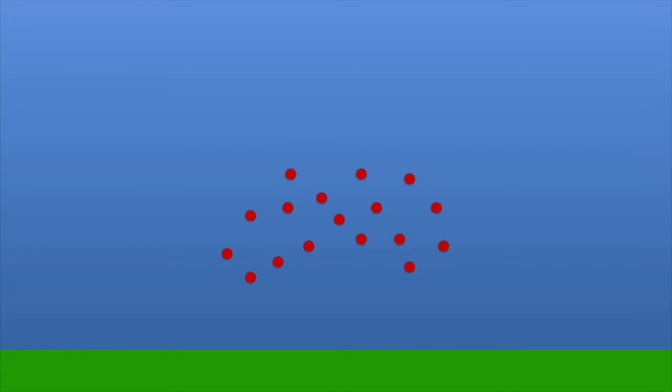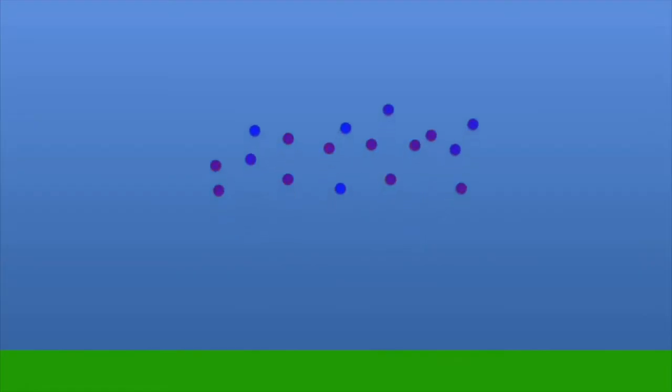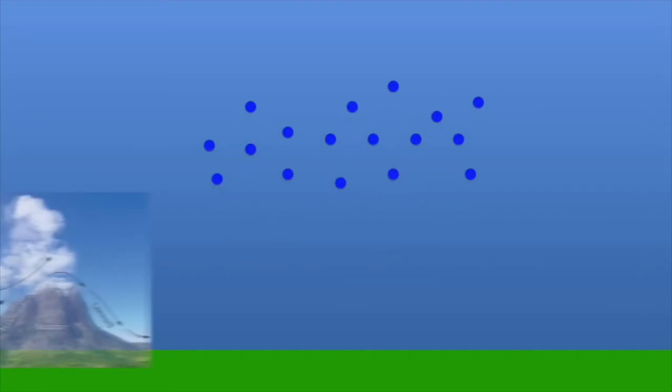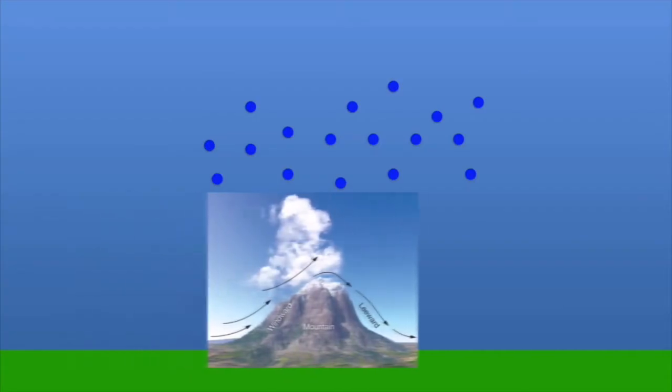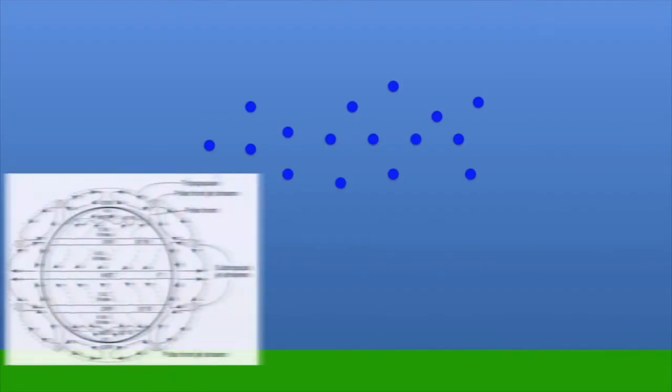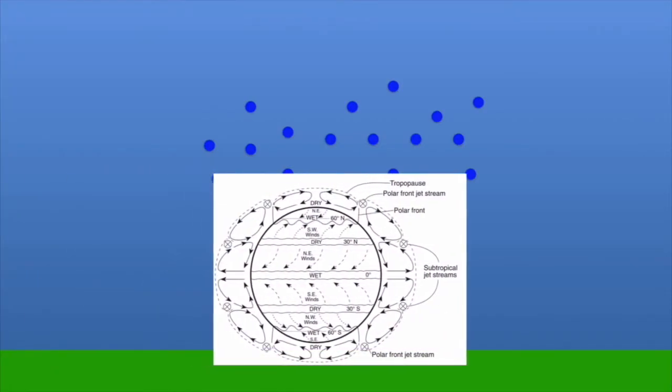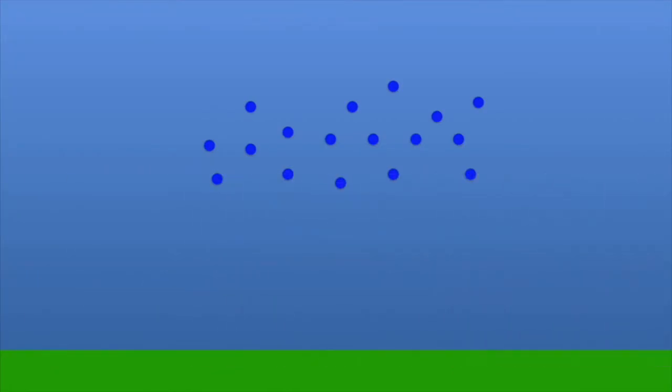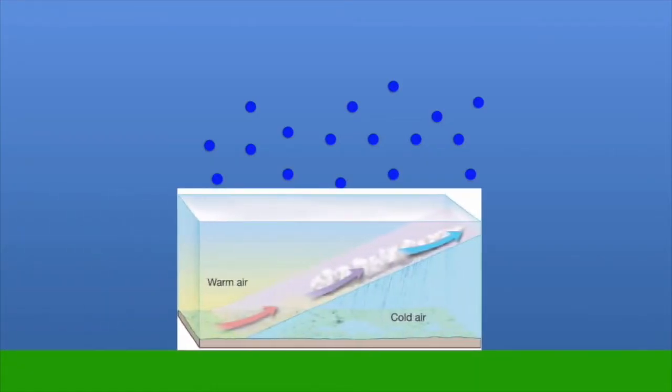In addition to convective lifting, some other mechanisms that lift air include orographic lifting — going up the side of a mountain — convergent zones where global winds meet, and also frontal wedging, which we haven't talked about and will explore later on.